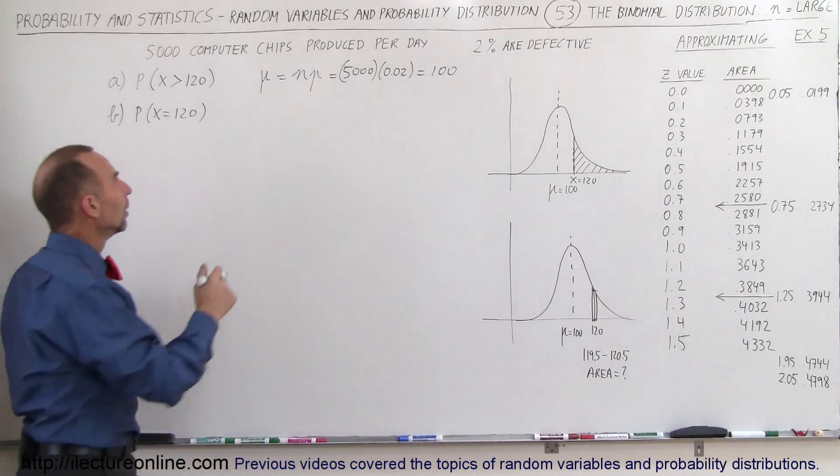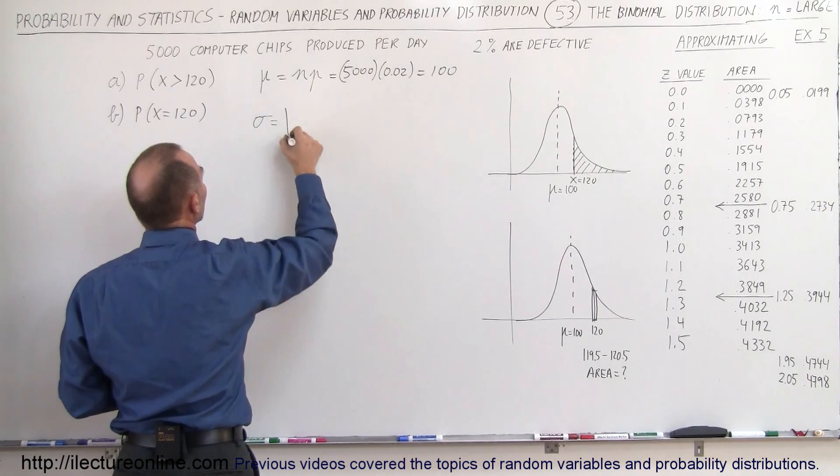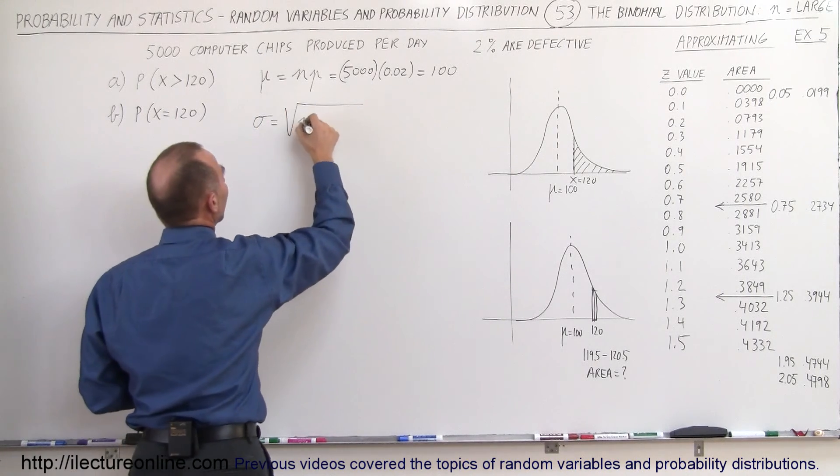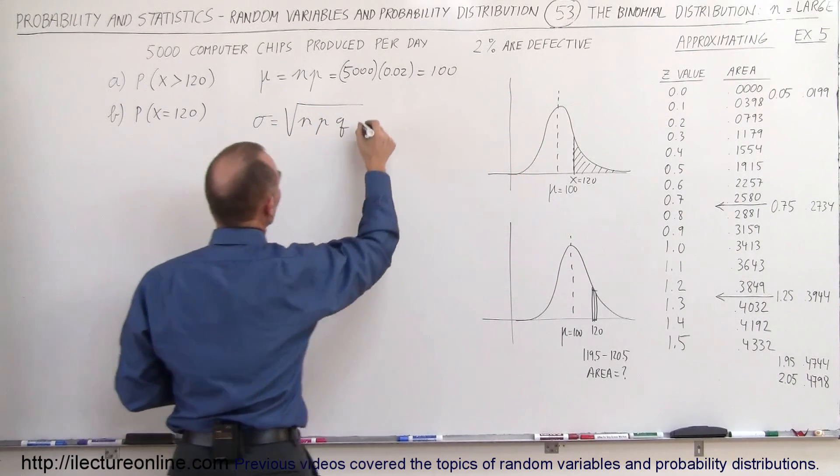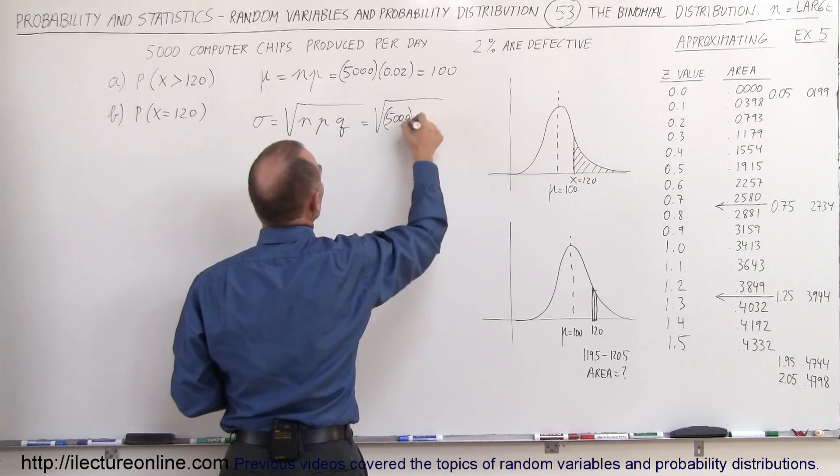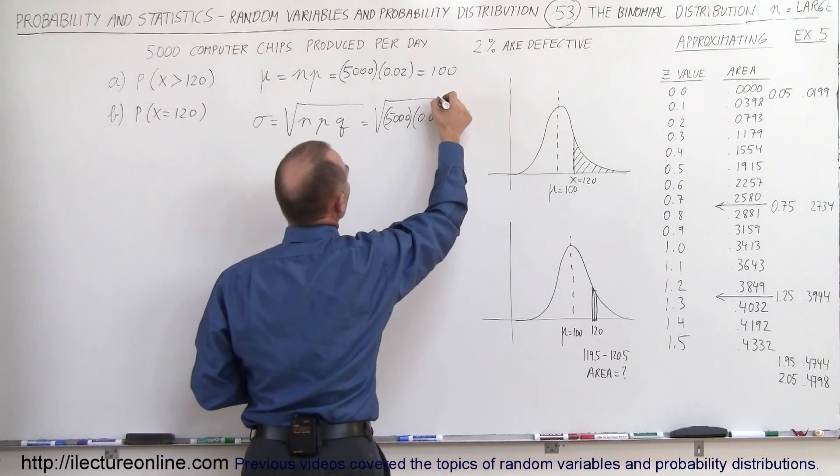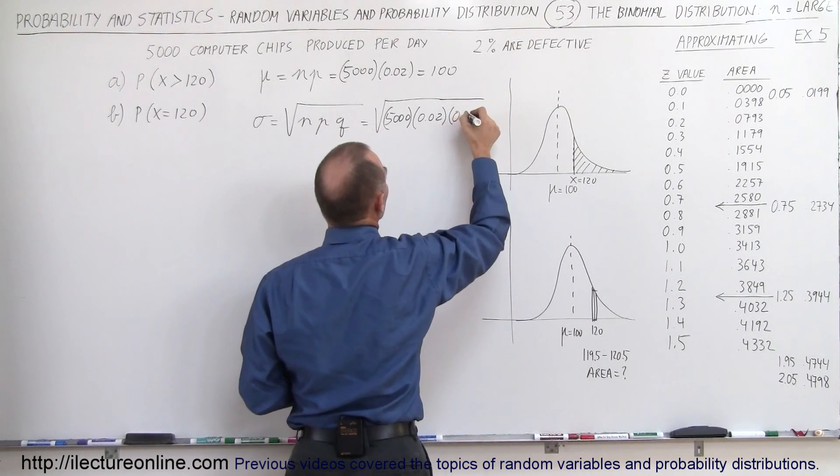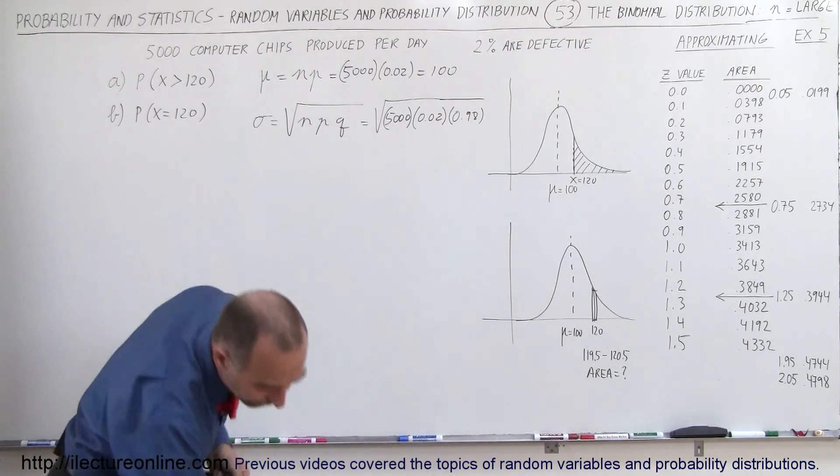The standard deviation is equal to the square root of the variance, which is N times P times Q. So that would be equal to the square root of 5,000 times the probability of success, 0.02, times the probability of failure, which is 0.98.